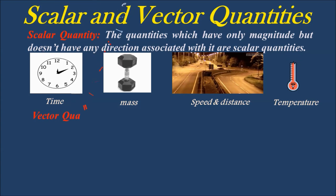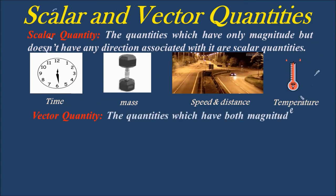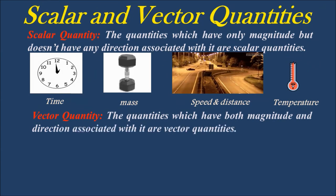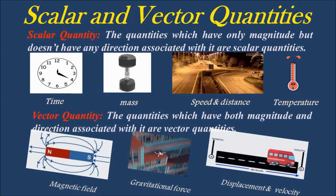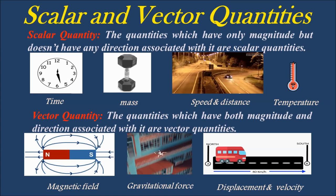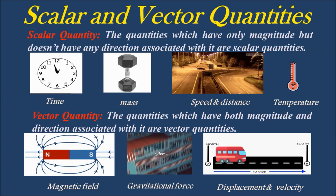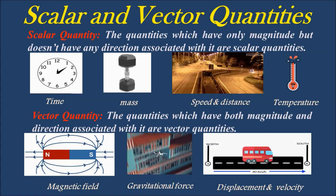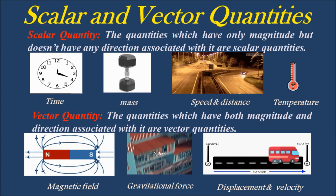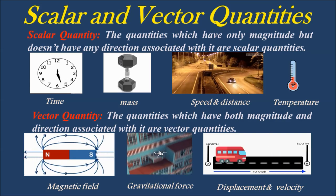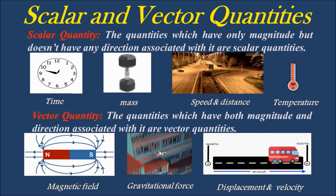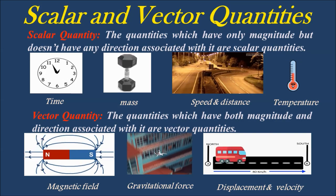The quantities which have both magnitude and direction associated with them are called vector quantities. Examples of vector quantities are: magnetic field, gravitational force, displacement, velocity, acceleration, force, weight, etc.